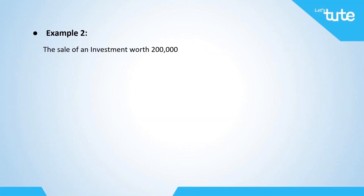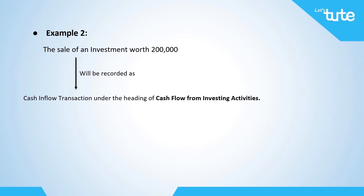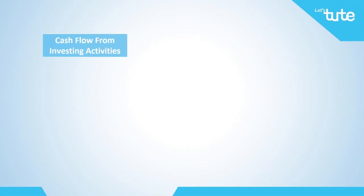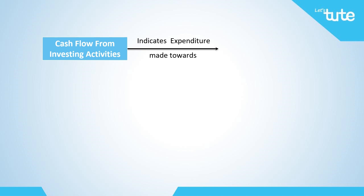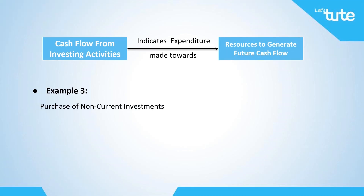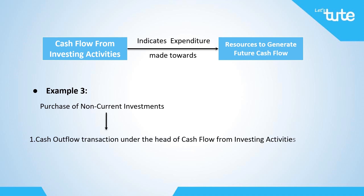The sale of an investment worth $200,000 is a cash inflow transaction which will be classified under the heading of investing activities within the cash flow statement, because the sale of an investment brings cash into the business. Cash flow from investing activities also indicates expenditures made towards resources intended to generate future income and cash flows. For example, the purchase of a non-current investment is a cash outflow transaction recorded under investing activities, since this purchase will generate revenue from the investment in future.